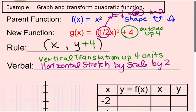Now when we're inside the function, we're affecting the x, the horizontal. So we're going to multiply every x value by 2. So if I come over and write my rule, I'm going to multiply every x by 2.